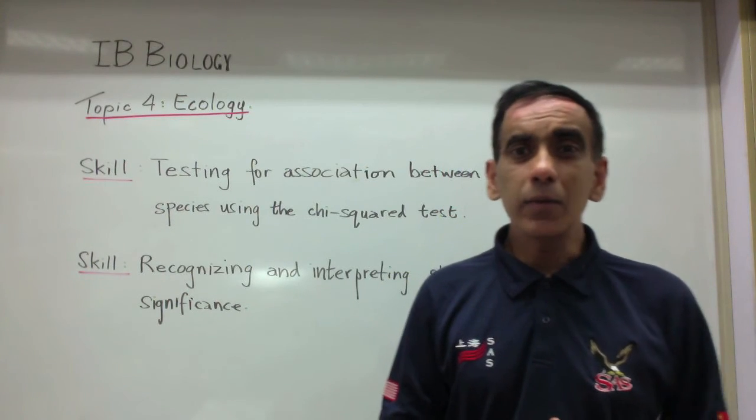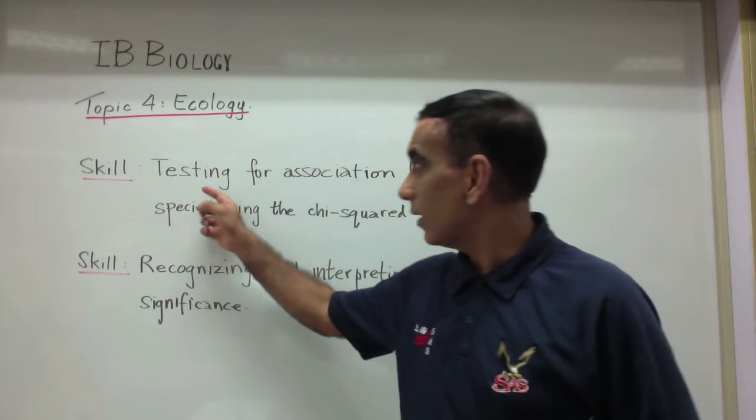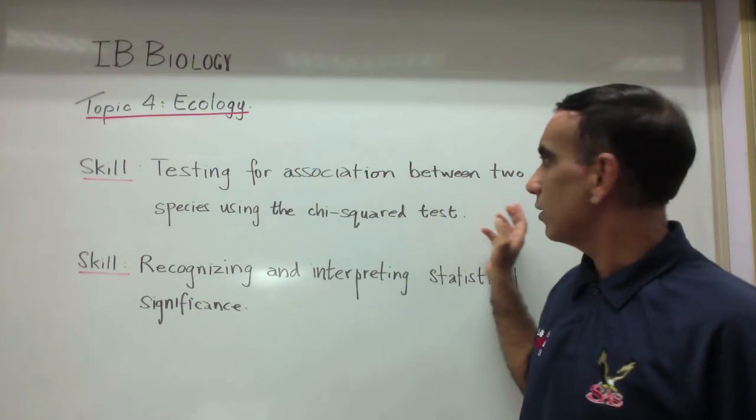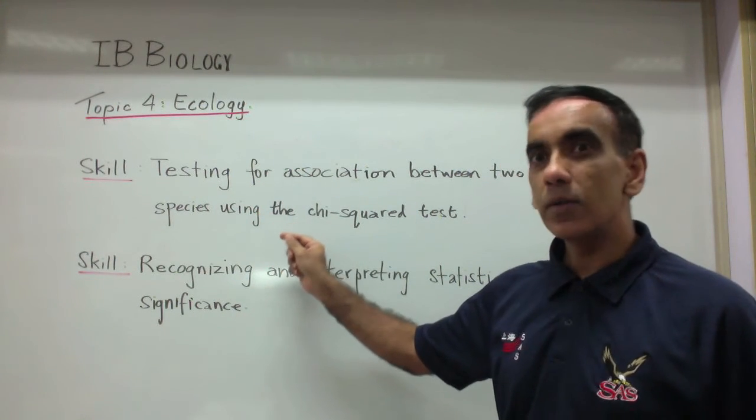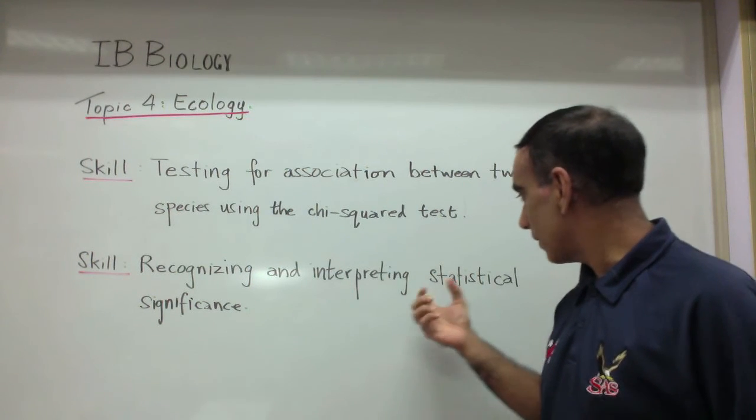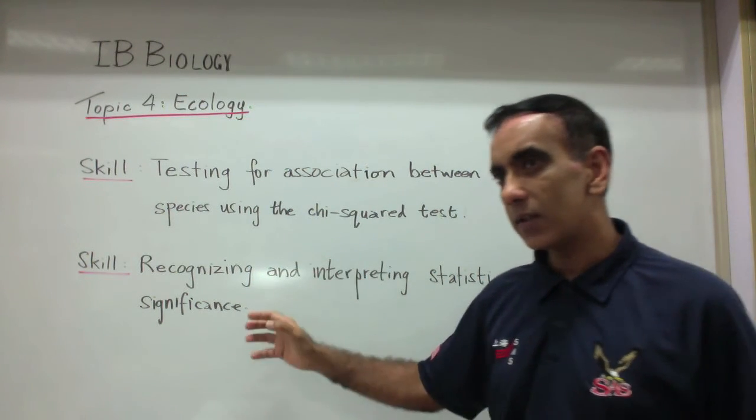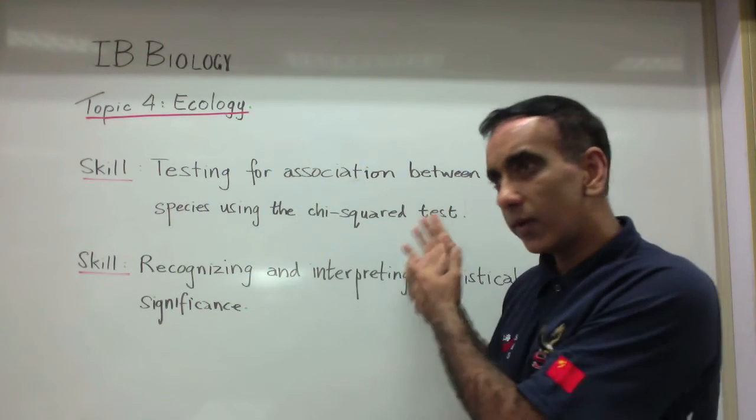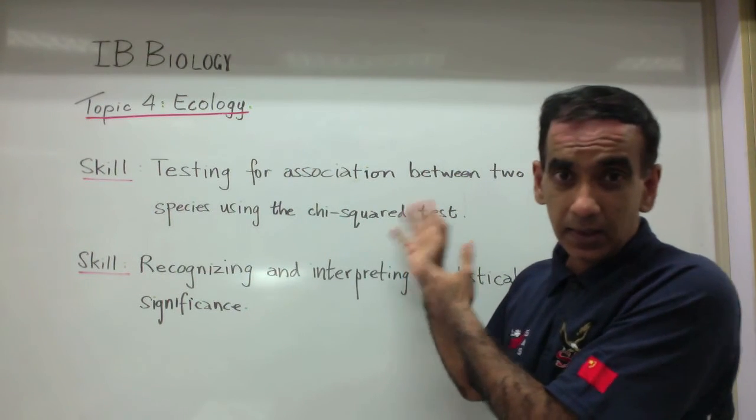Welcome again. Today we return to look at the skill testing for association between two species using the chi-squared test, and then recognizing and interpreting statistical significance, specifically with respect to this chi-squared test.